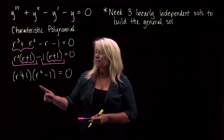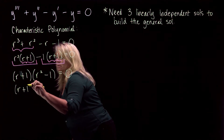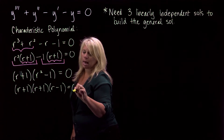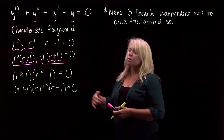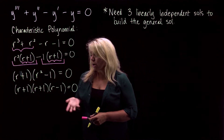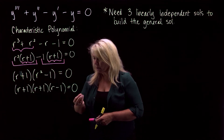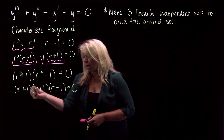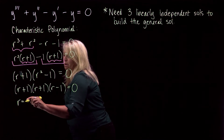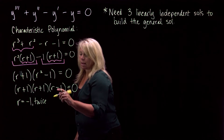Now we can easily finish factoring the second factor. The expression r² − 1 is a difference of squares, which factors easily. Once factored down to linear factors, we find the zeros by setting each factor equal to zero. The first two factors both equal zero at r = −1, so r = −1 is a repeated zero. The third factor gives r = 1.